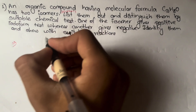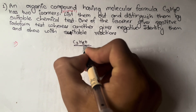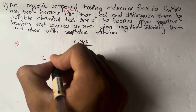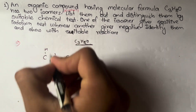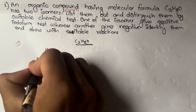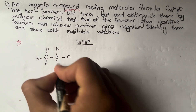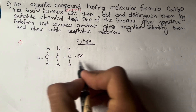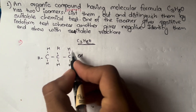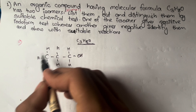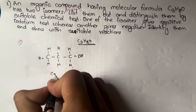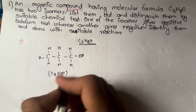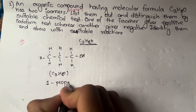We will use C3H8O alcohol. Drawing the structure: carbon is tetravalent, with hydrogen, hydrogen, hydrogen, oxygen. The OH group is on carbon 1. This gives us C3H8O — this is 1-propanol with the OH group on carbon number 1.